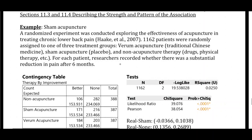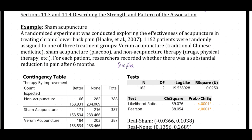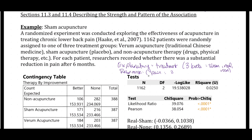The explanatory variable is the treatment — the type of medicine or approach used for treating their pain — and it has three levels: sham acupuncture, real acupuncture, or non-acupuncture. The response is pain reduction after six months, with two levels: did they get better, or was there no reduction? Both of these are categorical variables.